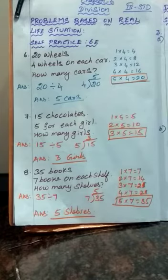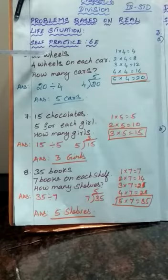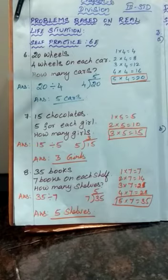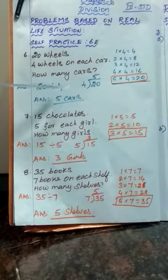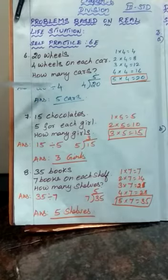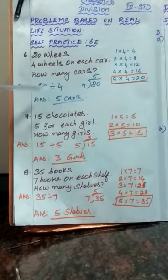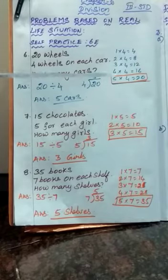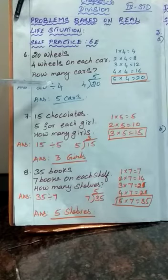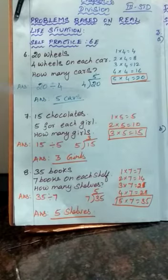So how will you do that sum? First you have to divide the total wheels by the number of wheels on each car. Total wheels — how much? 20. So 20 divided by 4. One car has how many wheels? 4. So 20 divided by 4. This is the short method. You have to divide that. In this sum which one is the dividend? 20 is the dividend. 4 is called the divisor.